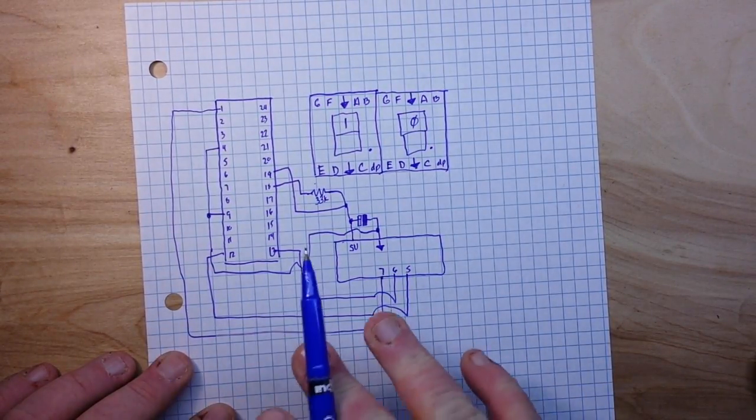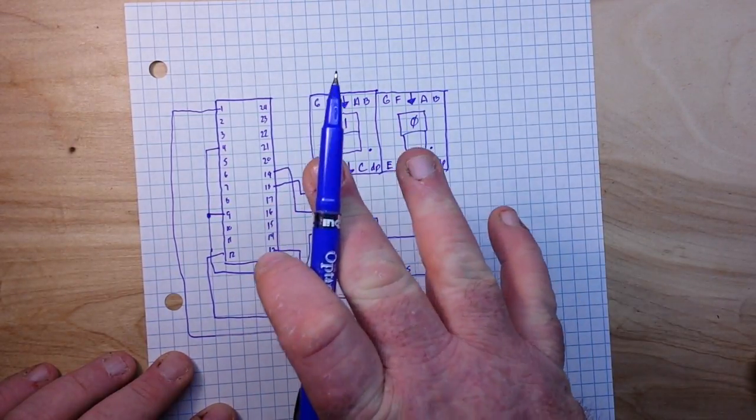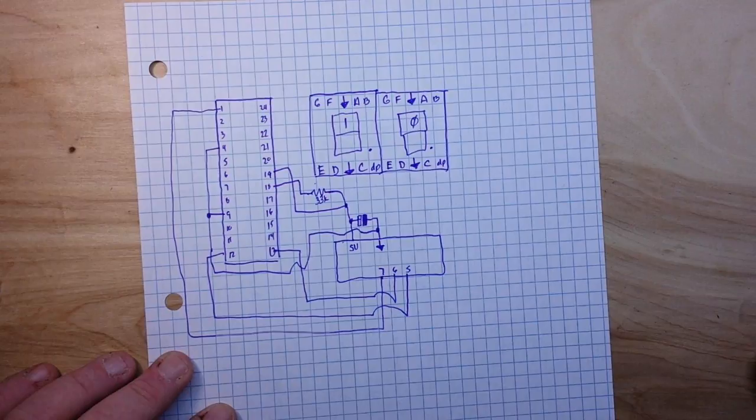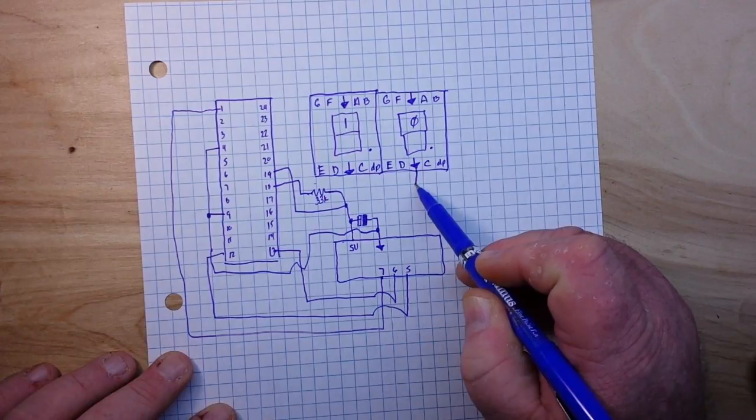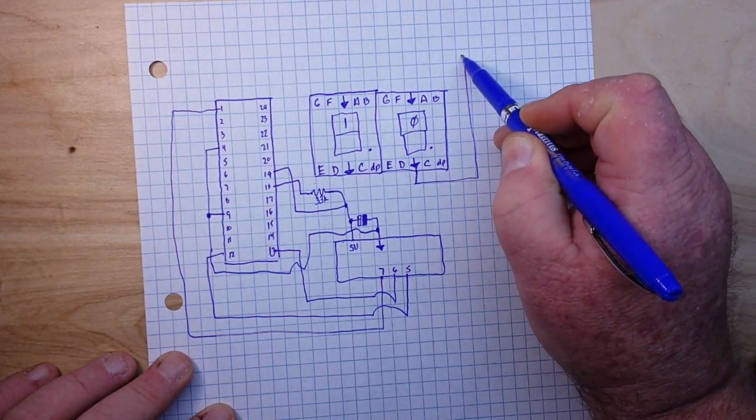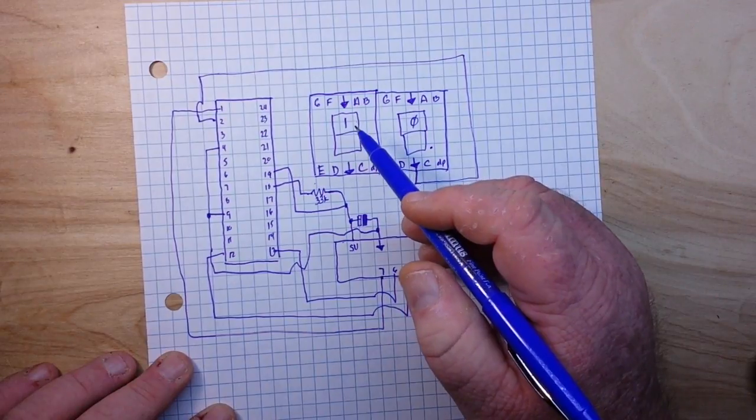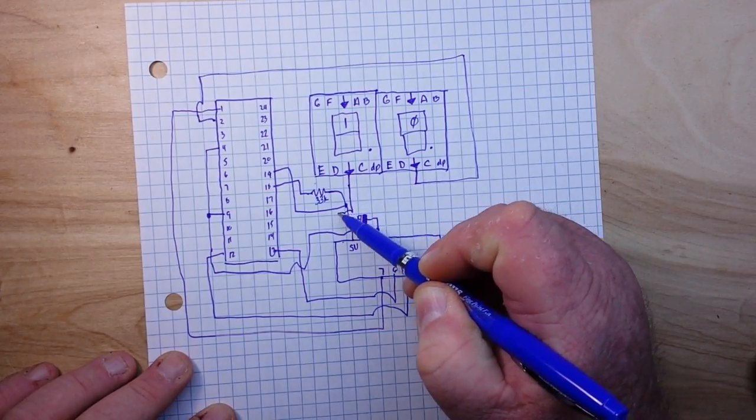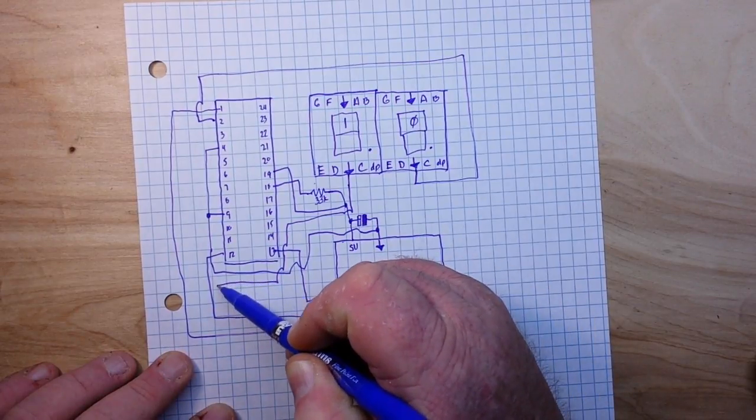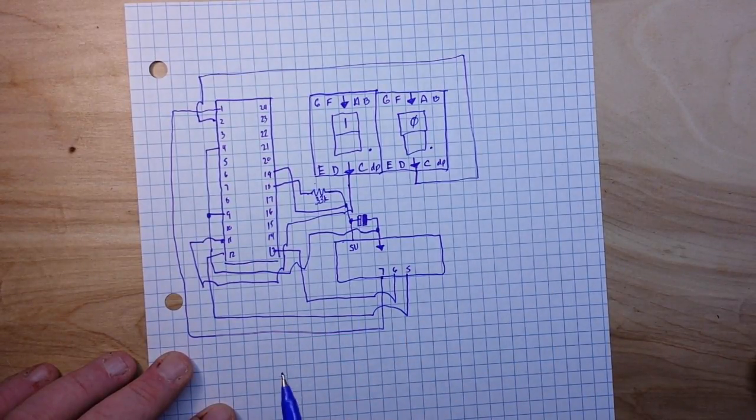So that handles all of our connections between the Arduino and the MAX7219. Now let's hook up our two seven segment displays to the MAX. The first thing we need to do is hook up our digits. So digit zero, pick one of your ground pins, it really doesn't matter which one. Digit zero connects to pin 2, and digit one connects to pin 11. So those are our digits.